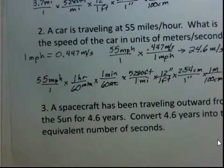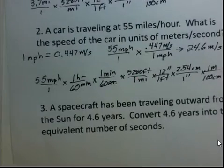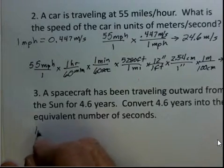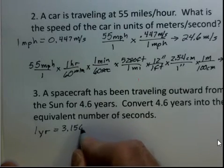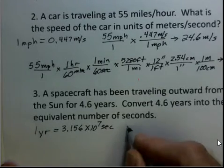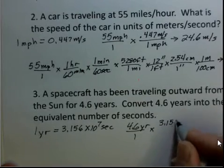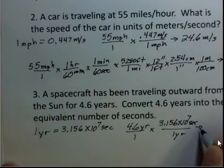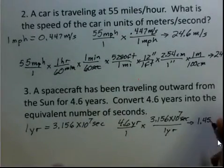Last one, time conversion. We've had a certain situation, 4.6 years has elapsed. How many seconds is that? And there's a conversion factor in many books that tells you one year is the same as 3.156 times 10 to the seventh seconds. And to apply that, 4.6 years divided by 1, 3.156 times 10 to the seventh seconds is one year. And we end up with 1.45 times 10 to the eighth seconds.